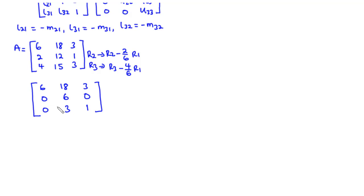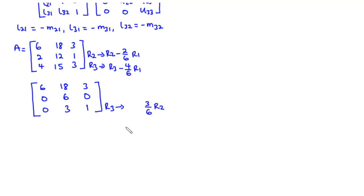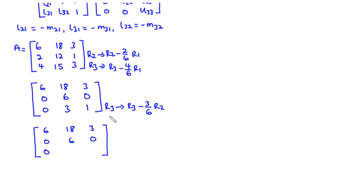Now we focus on making the remaining value go to zero. The pivot row is now row 2 and the pivot element is 6. To make this value go to zero, we perform elementary row operations on row 3: multiply row 2 by 3 over 6 and subtract from row 3. Row 3 becomes: 0 minus (3/6) times 0 = 0; 3 minus (3/6) times 6 = 0; and 1 minus (3/6) times 0 = 1. This gives us the upper triangular matrix at the end of the two forward elimination steps.